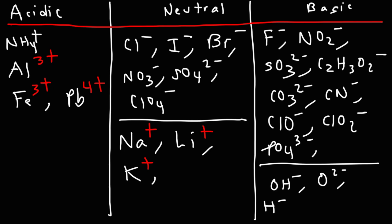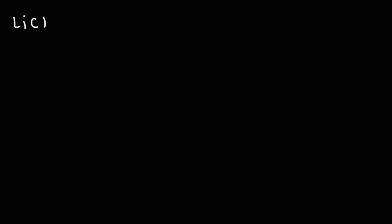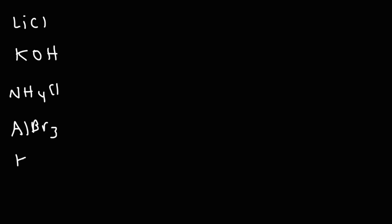So now, with this information, we can work on some example problems. I'm going to write down a list of ionic compounds, and I want you to write A if the salt is acidic, B if it's basic, and N if it's neutral. Feel free to identify these compounds as acidic, basic, or neutral.